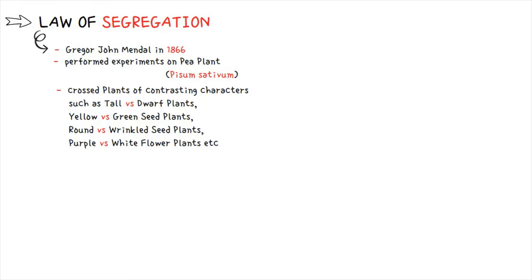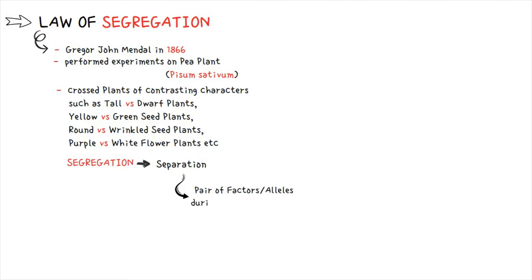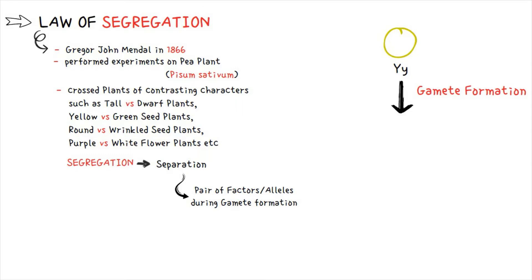Based on those results, he gave his first law — the Law of Segregation. The word segregation means separation — specifically, separation of a pair of factors or alleles during gamete formation. For example, suppose we have a plant that produces yellow seeds.